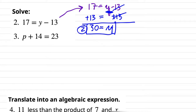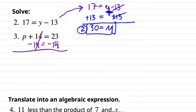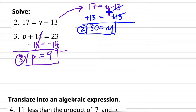For number three: p plus 14 equals 23. The opposite of adding 14 is subtracting 14, and we do it to both sides. It cancels on the left, leaving p on the left side. On the right side, 23 minus 14 is 9. So we get p equals 9.